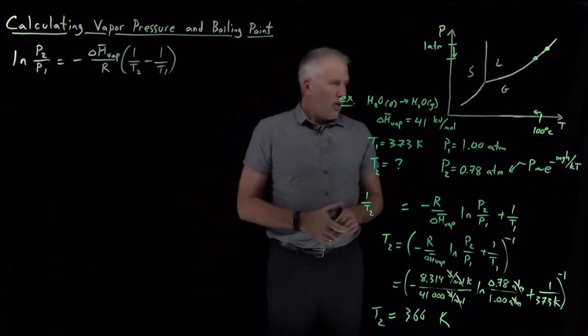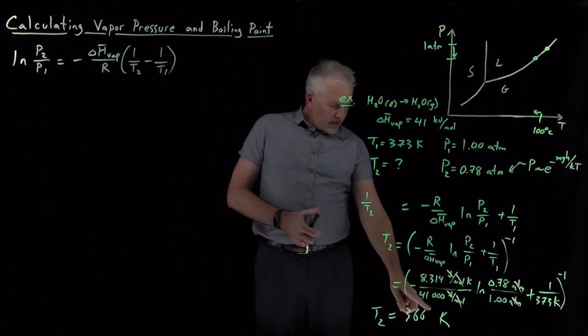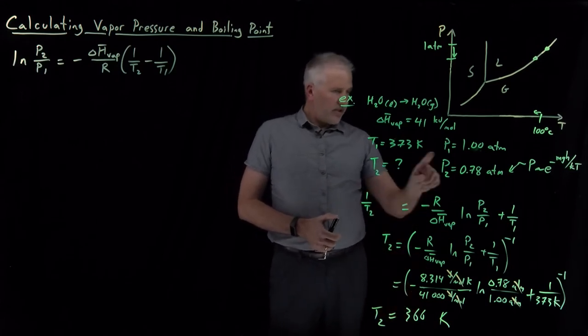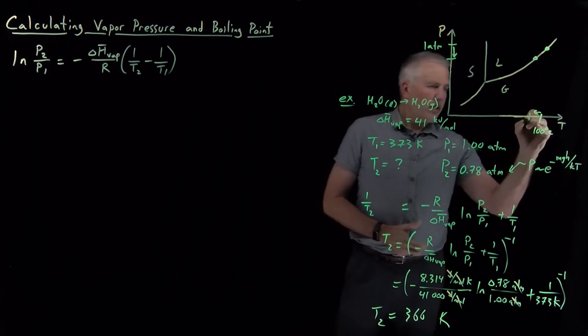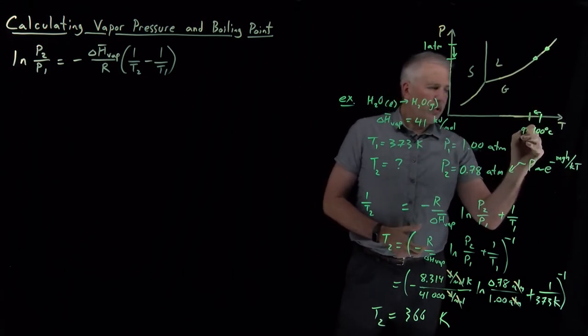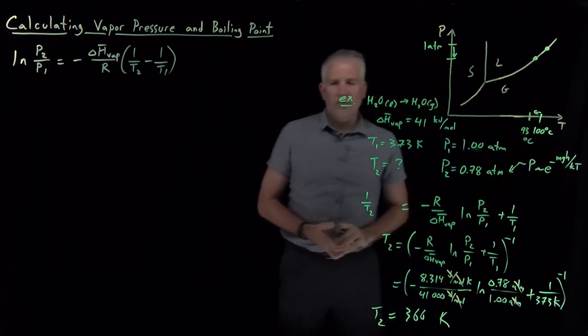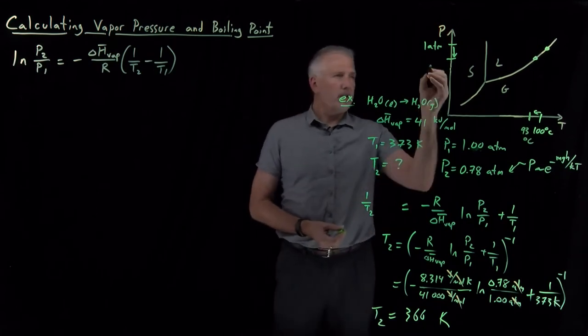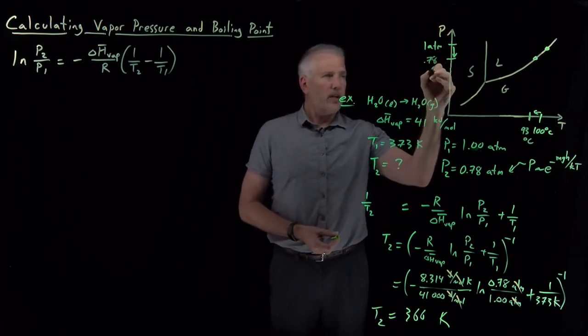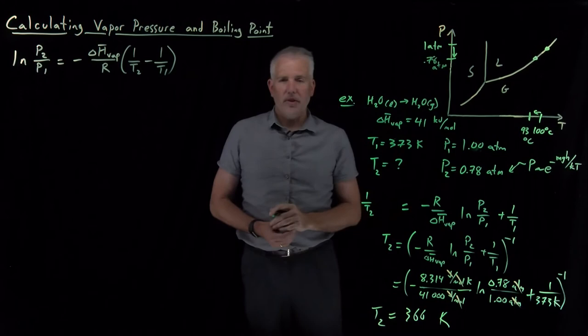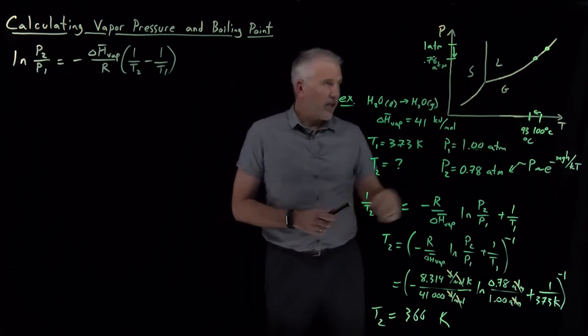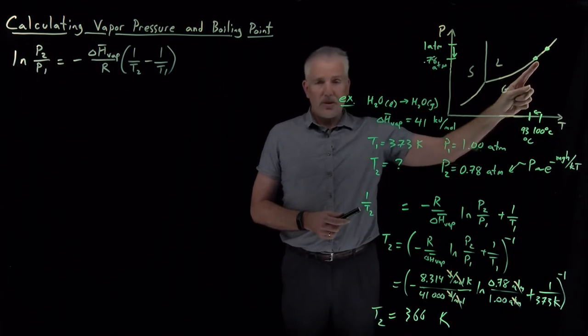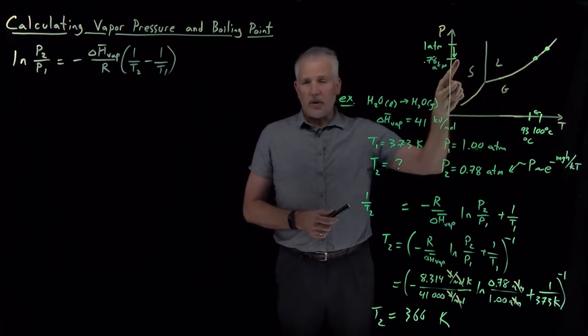So what does that mean? 366 Kelvin is 7 degrees cooler than the initial temperature of 373 Kelvin. So the boiling point has reduced a bit. It's been reduced from 100 degrees Celsius to 93 degrees Celsius when I boil water at 0.78 atmospheres rather than one atmosphere. So we are able to calculate how much the boiling point has been reduced when I'm in an environment with lower atmospheric pressure.